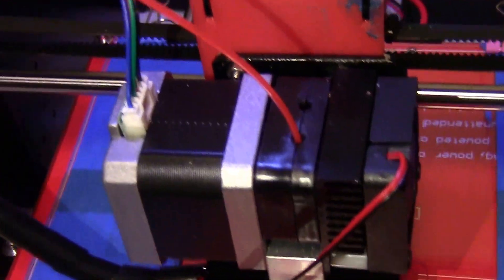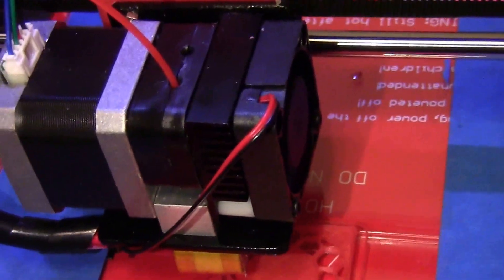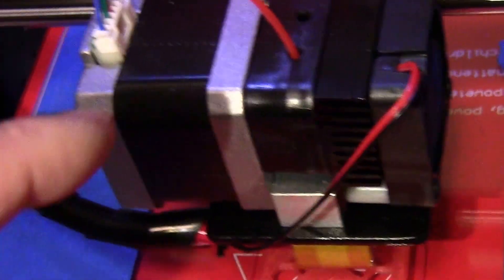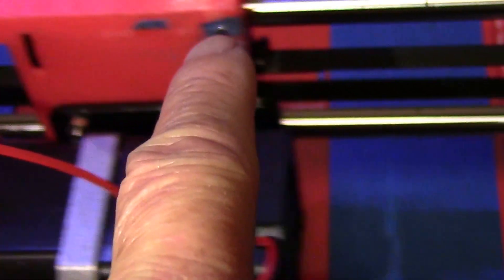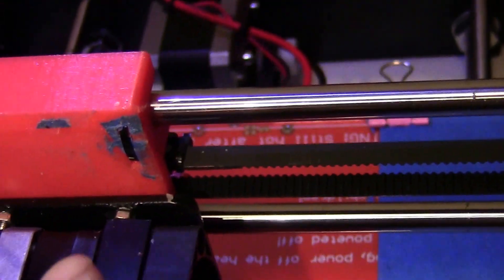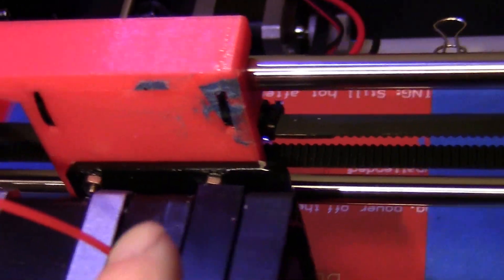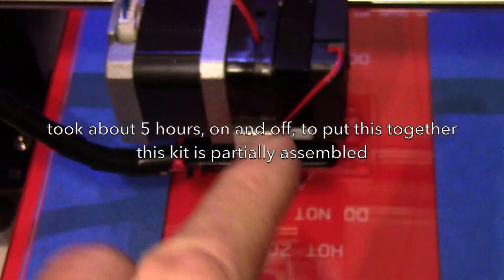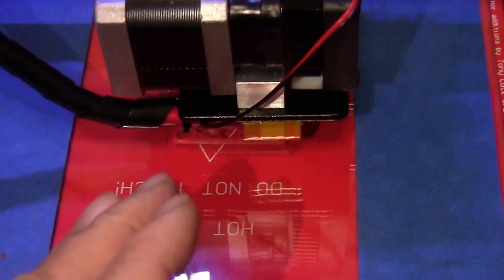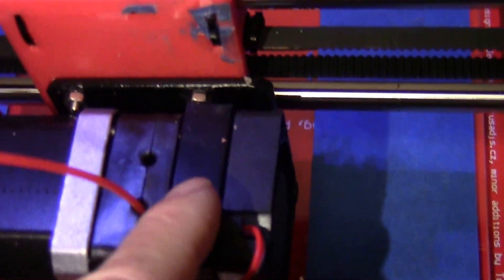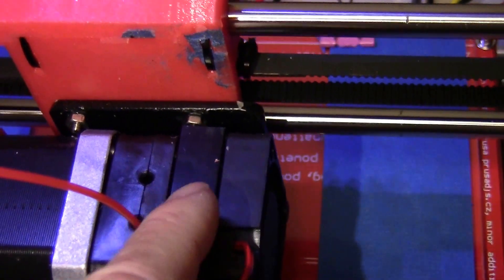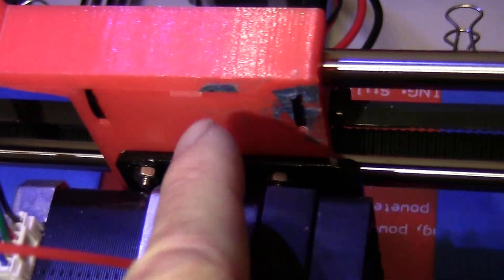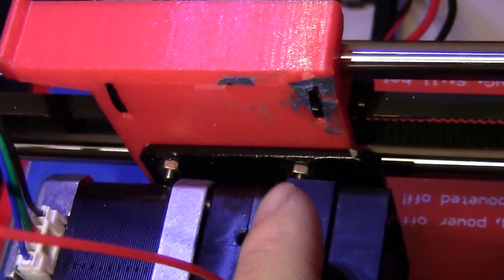I remember the only other problem I had in assembling this is the mounting bracket to this traversing axis mechanism here. Because some of the parts here are assembled already, I didn't want to take it apart. And without taking it apart, it's very difficult to mount the bracket to this plastic part here.